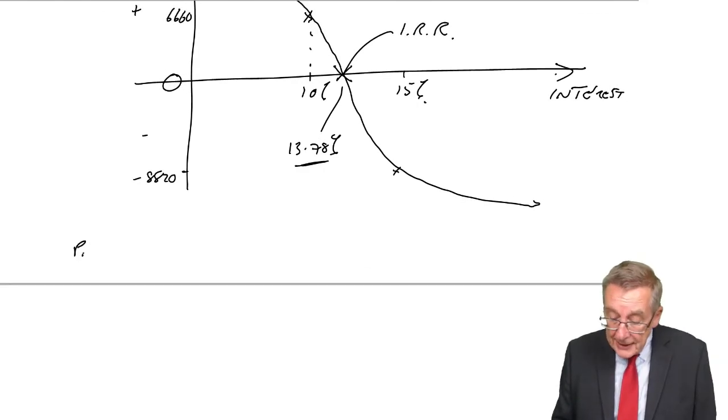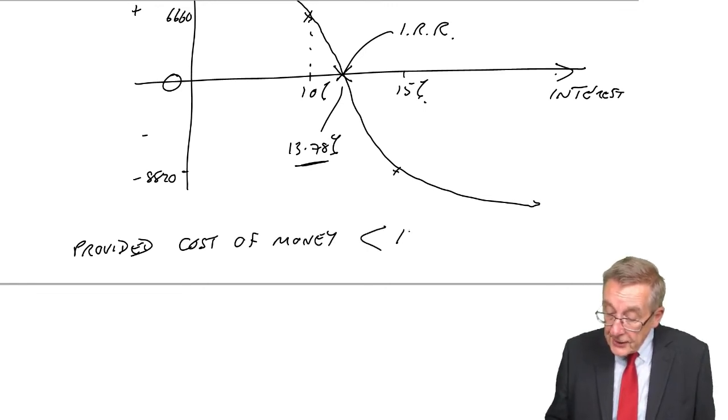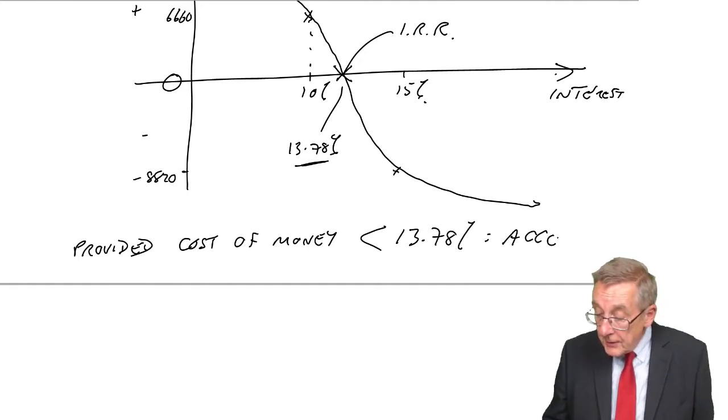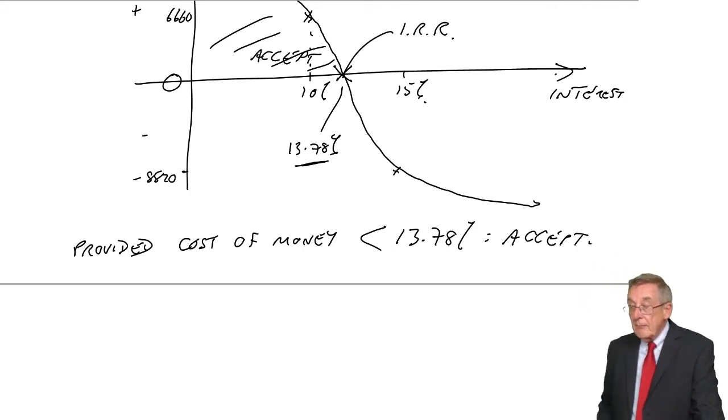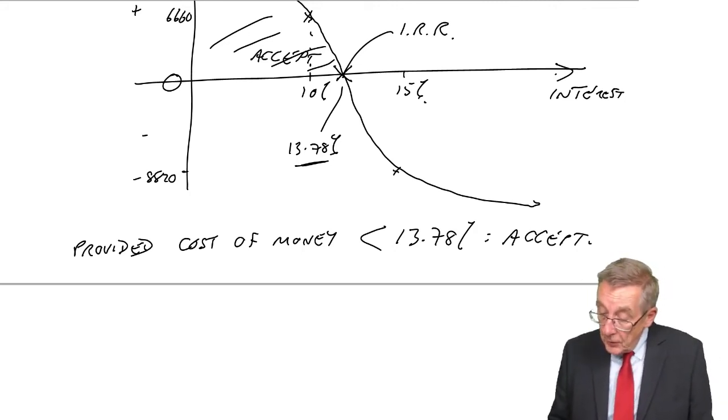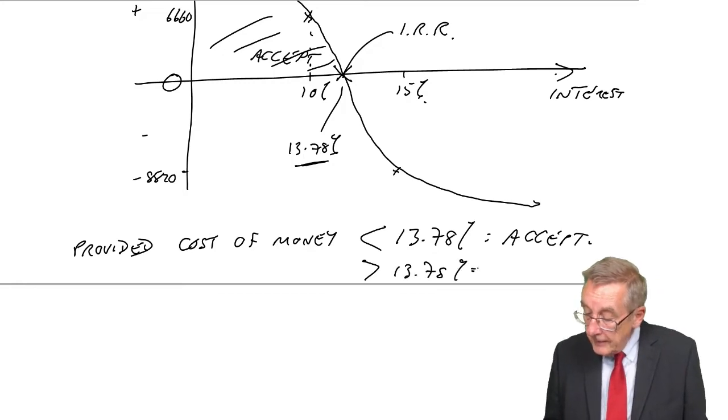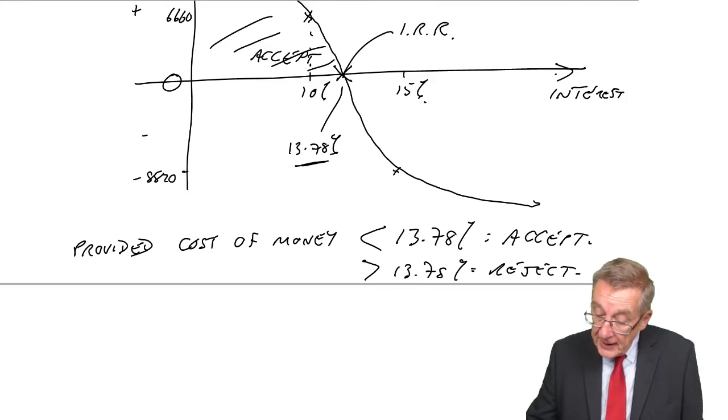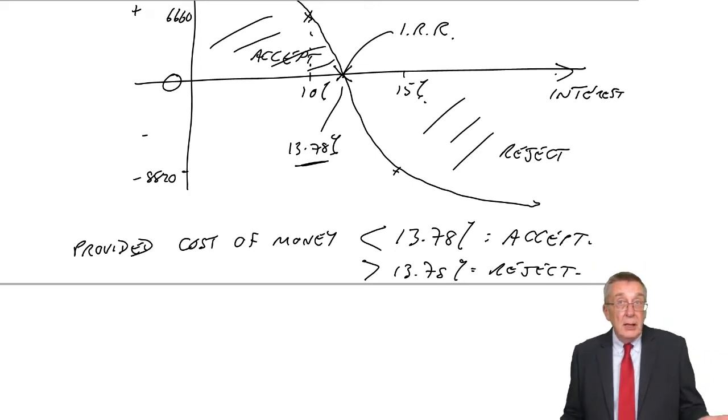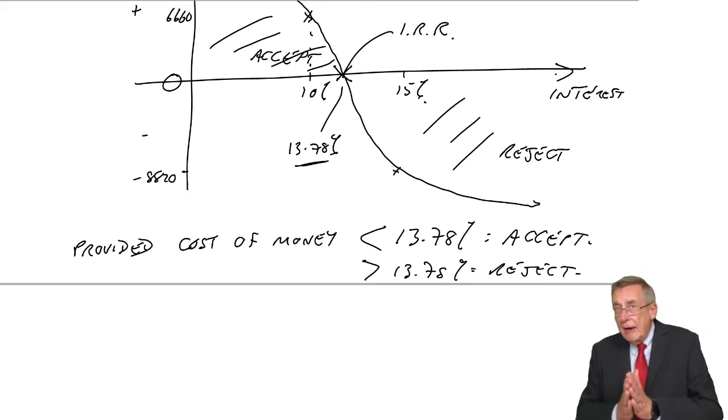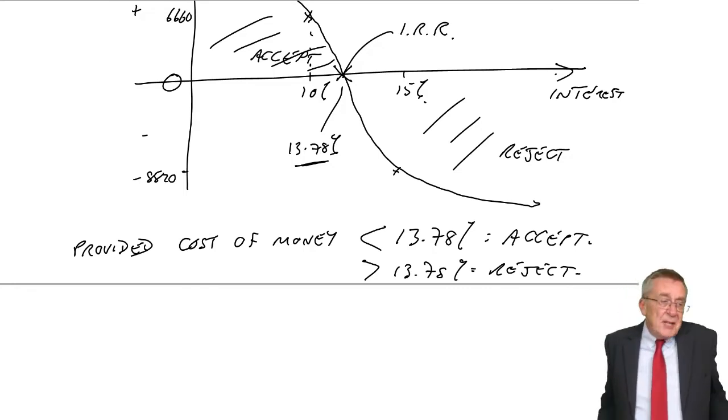We know that provided that the cost of money is less than 13.78%, then we should accept. Anywhere up here, it'll be positive, we'd accept. But if ever it was more than 13.78%, we should reject because the NPV will be negative. We don't know, but it gives us a margin for error.